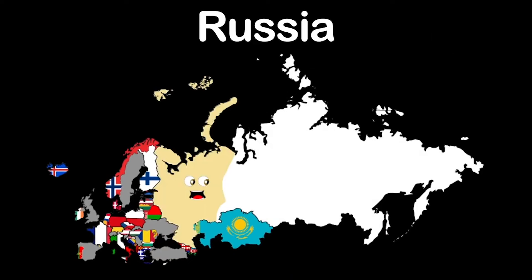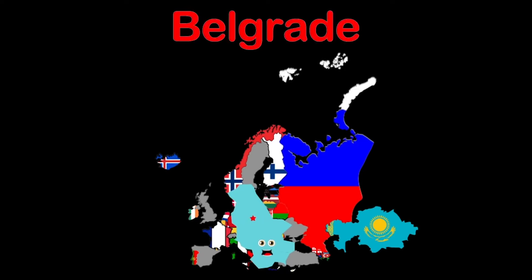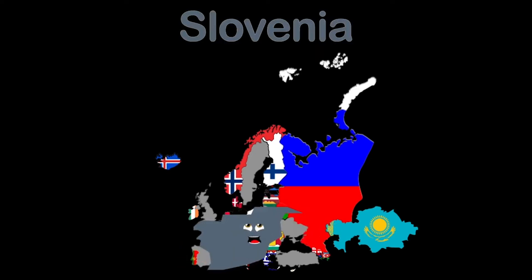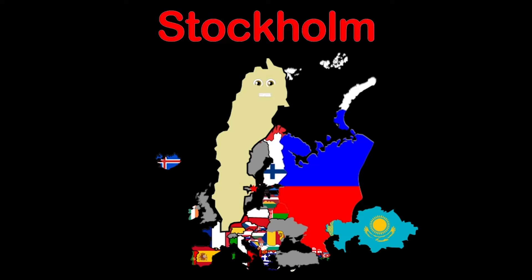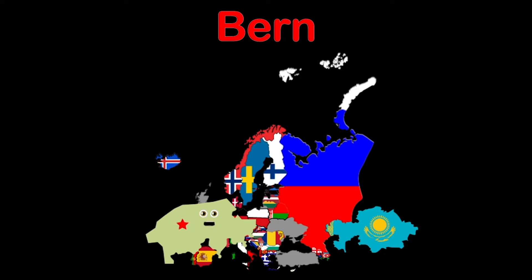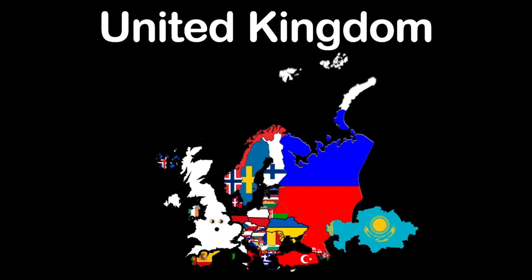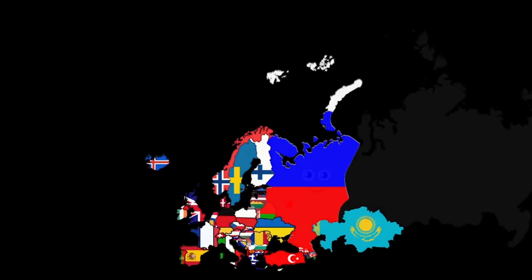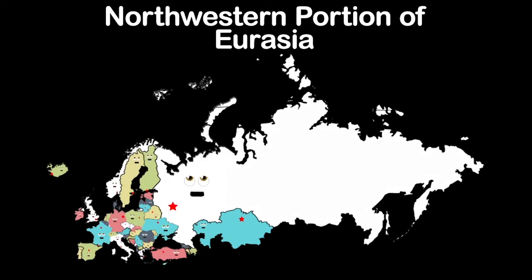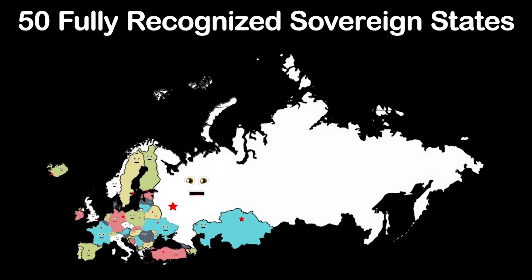Russia — Moscow. San Marino — San Marino. Serbia — Belgrade. Slovakia — Bratislava. Slovenia — Ljubljana. Spain — Madrid. Sweden — Stockholm. Switzerland — Bern. Turkey — Ankara. Ukraine — Kyiv. United Kingdom — London. Vatican City — Vatican City. We are the countries of the continent of Europe, the northwestern portion of the larger landmass called Eurasia — 50 fully recognized sovereign states that we will teach ya.